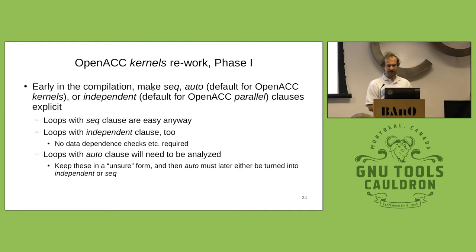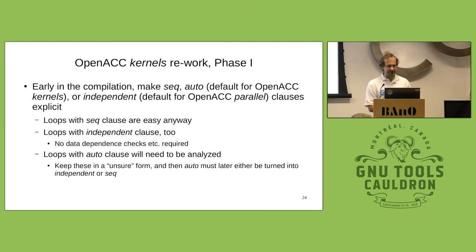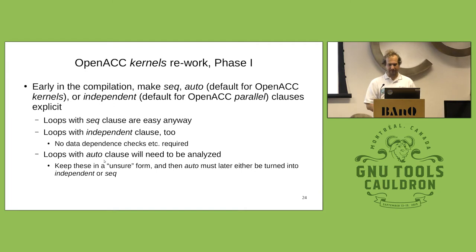Then we have to make explicit any implicit clauses. Loops with the `sequential` clause are easy to deal with — they don't need to be parallelized or analyzed. `independent` is also easy because the user tells the implementation that loop iterations are independent. The `auto` clause is more difficult and will persist through the compiler process until we get to a point where we can figure out whether loop iterations are data dependent or not.